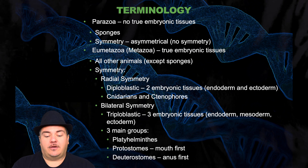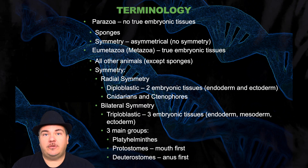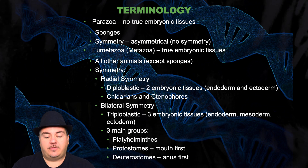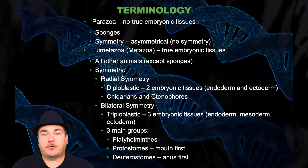Examples of diploblastic animals are cnidarians and ctenophores — these are the jellies like jellyfish. Animals with bilateral symmetry are triploblastic, meaning they have three embryonic tissues: the endoderm, mesoderm, and ectoderm. There are three main groups of bilaterally symmetrical animals: Platyhelminthes, and then the protostomes and the deuterostomes, which we briefly discussed in the previous chapter.